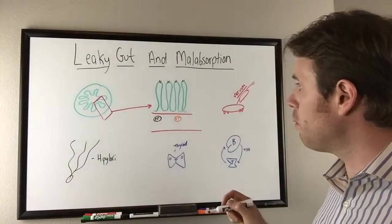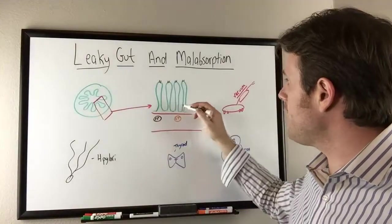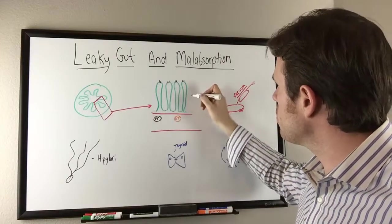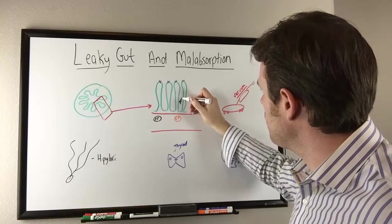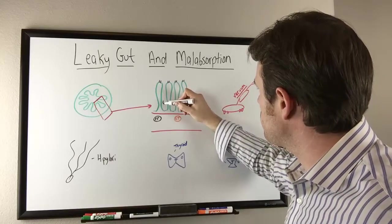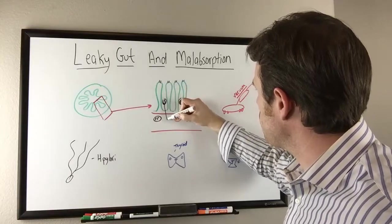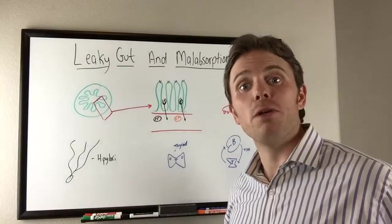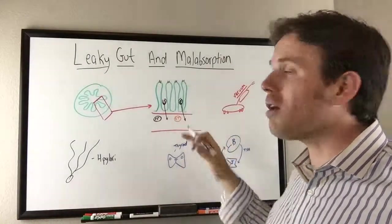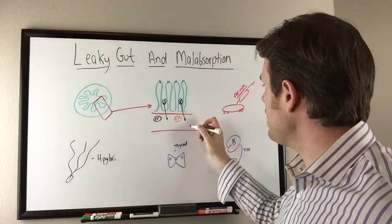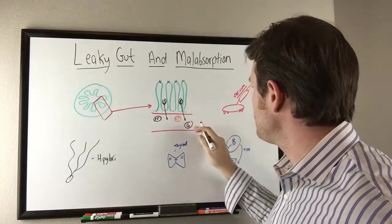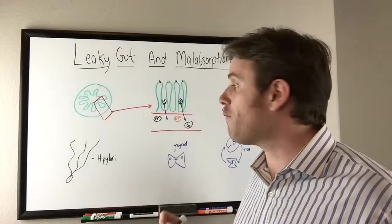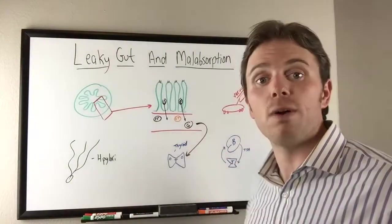When inflammation happens in the gut, these little pockets open up and various food particles or endotoxin can slip through into the bloodstream. This puts stress on our immune system and makes our immune system fire up. There's also a state of molecular mimicry — for example, gluten is actually very similar to thyroid tissue from a protein standpoint. So our immune system will fire off antibodies that will attack the thyroid tissue as well.